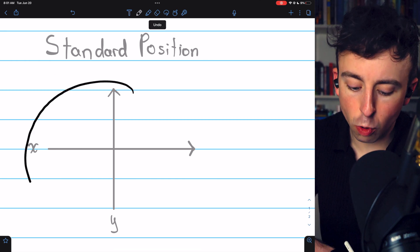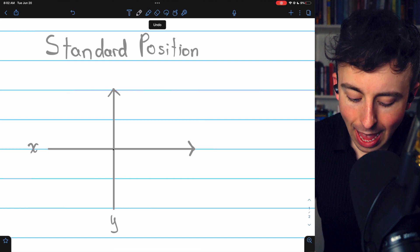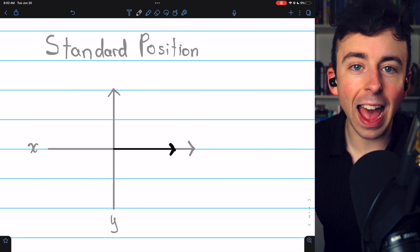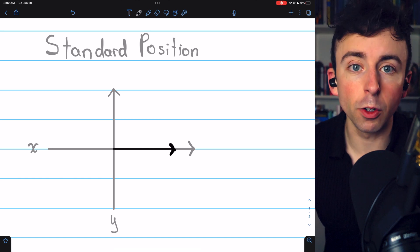This makes them easier to compare. An angle in standard position, drawn on the xy plane, has its initial side fixed along the x-axis in the positive direction.